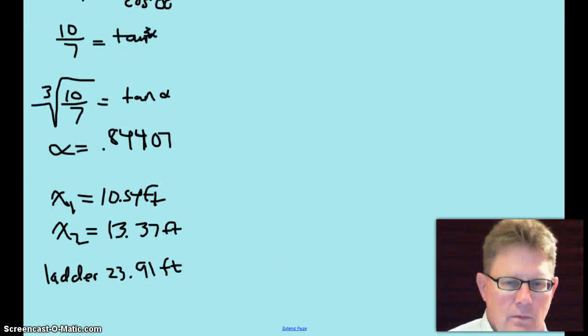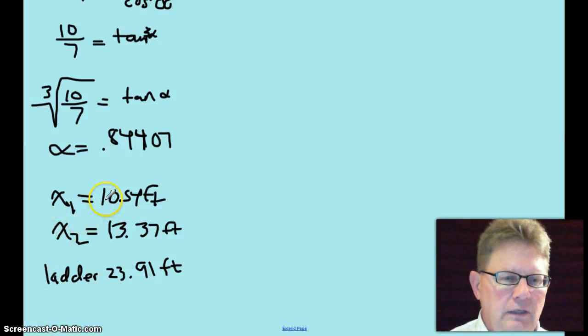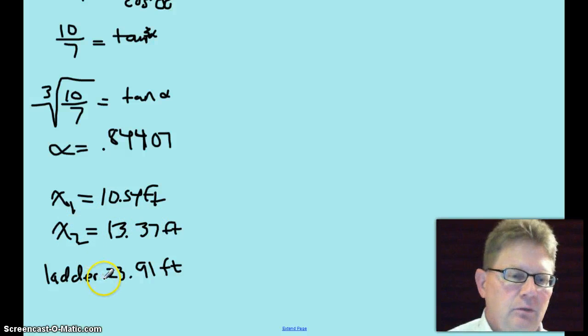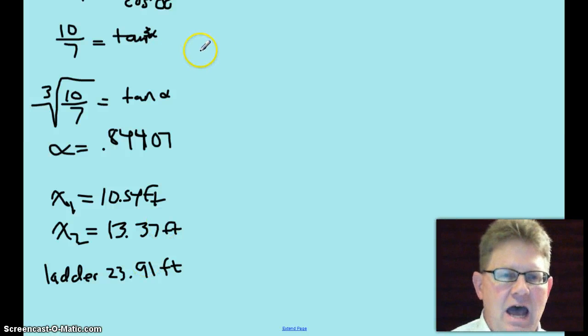So I'll go ahead and do that. Putting it back into the original values for x sub 1 and x sub 2, I got x sub 1 being 10.54 feet and x sub 2 being 13.37 feet. So the ladder at maximum can be 23.91 feet, just under a 24 foot ladder. And I know I did not find out if that was a relative min or a relative max. You should go back and do that just to make sure.